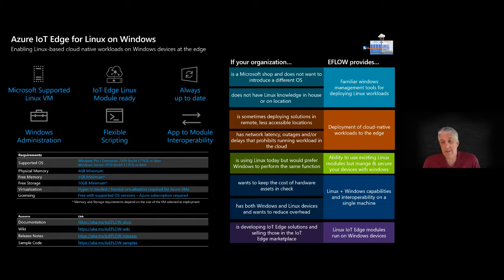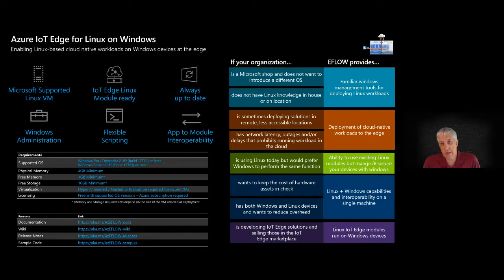So any release after the latest LTSC release — Windows IoT LTSC and Server LTSC. The environment requires the physical device to have a minimum of 4GB of RAM. This is because we need to spin up the smallest virtual machine we can, which is 1GB.